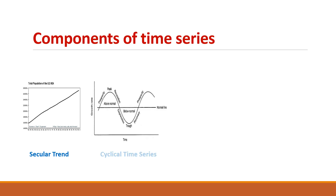The next component is cyclical time series. This type of time series regularly follows a swing or pattern that repeats over a long period of time. The movements usually occur over more than one year. For example, in business cycles, the stages follow a swing pattern and it usually takes more than one year to pass through all stages of the business cycle — it is not going to complete within one year. So more than a one-year period is required for a cyclical time series.